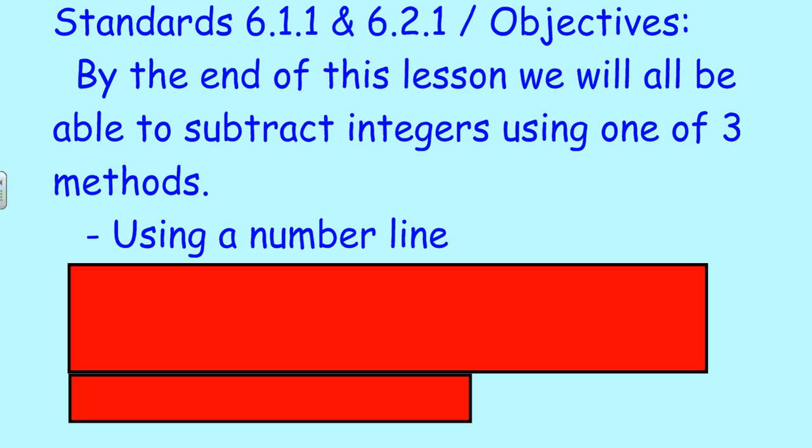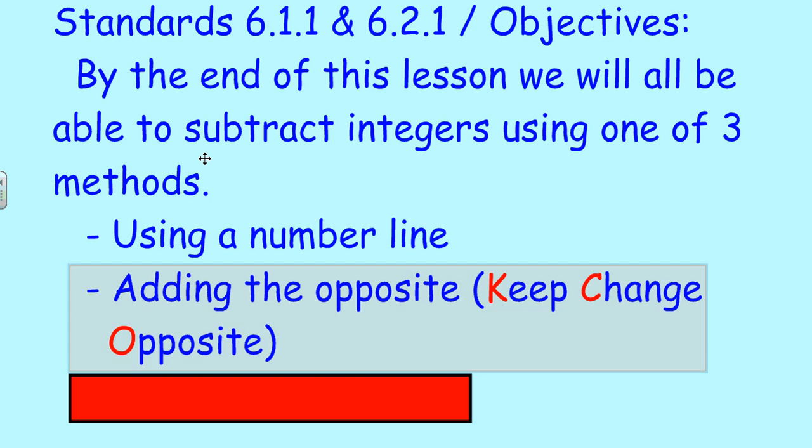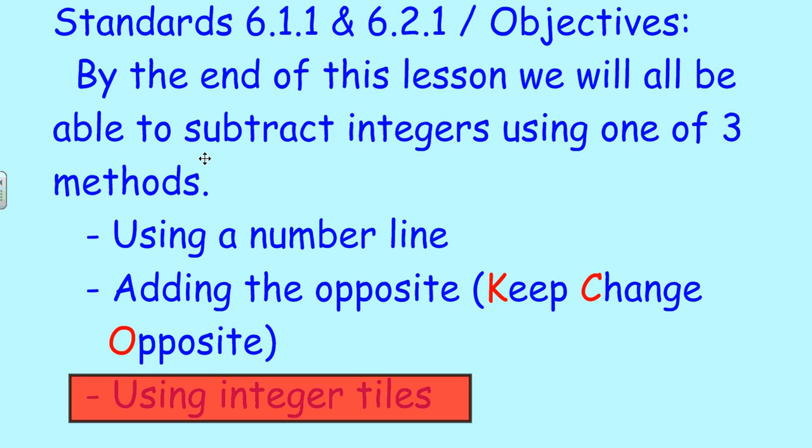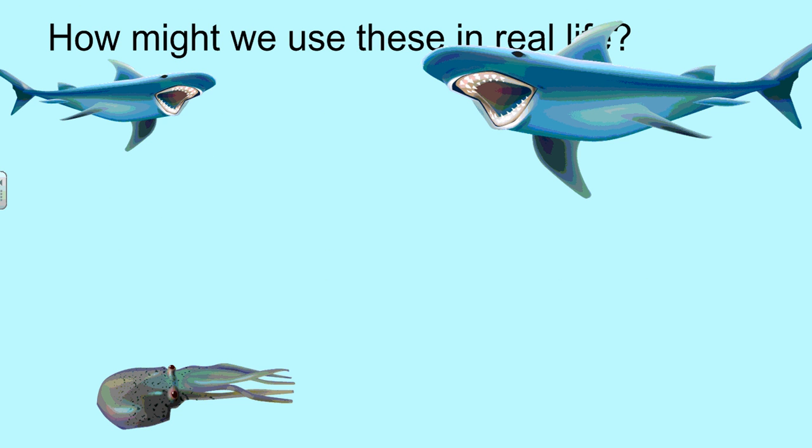It could be using a number line, it could also be adding the opposite, which I think is probably the best method - keep change opposite - or you could even use integer tiles. Let's move on.